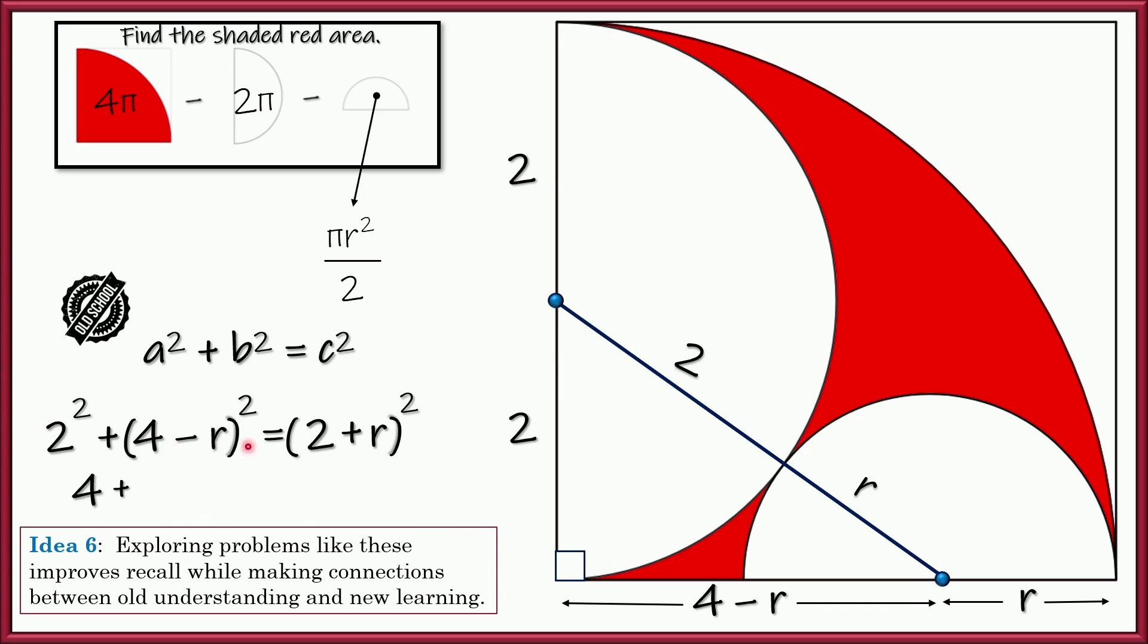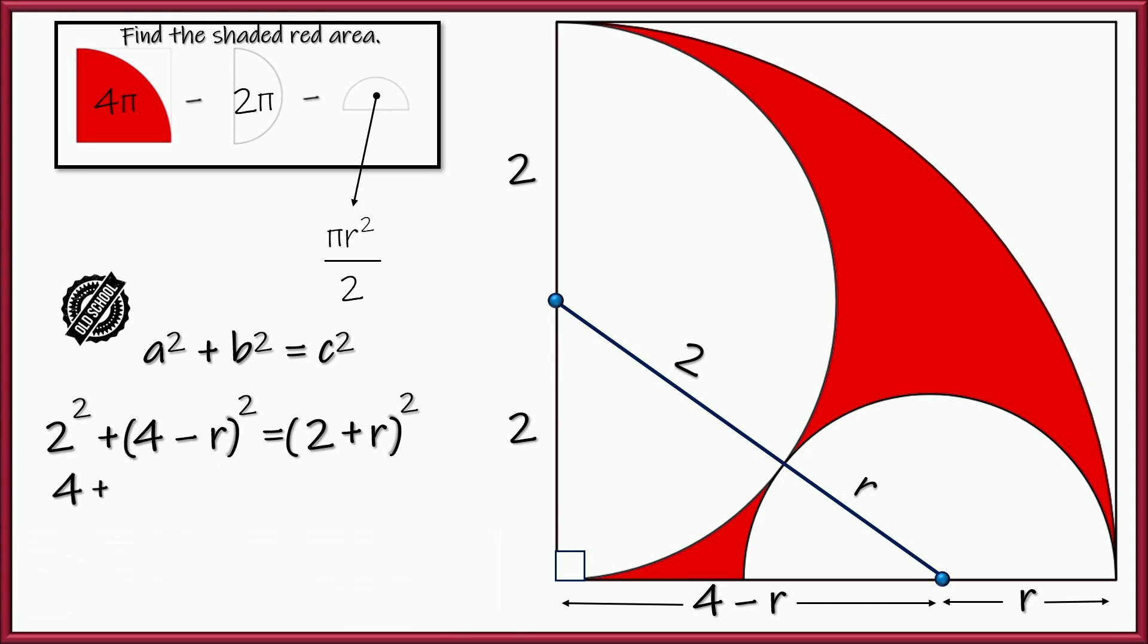And if we simplify that, 2 squared is 4. 4 minus r squared, you have to use, you know, the shortcut would be FOIL. So we're going to get 16 minus 8r. And I move that over so I've got enough room. 16 minus 8r plus r squared. And if we do the same thing to the other side, you get 4 plus 4r plus r squared. All right? So a little bit of algebra here. We're going to have to clean this up. There's an r squared on both sides. So we could subtract that away, make that go away. And where there's a 4 on both sides, we could subtract those. Those both make 0.